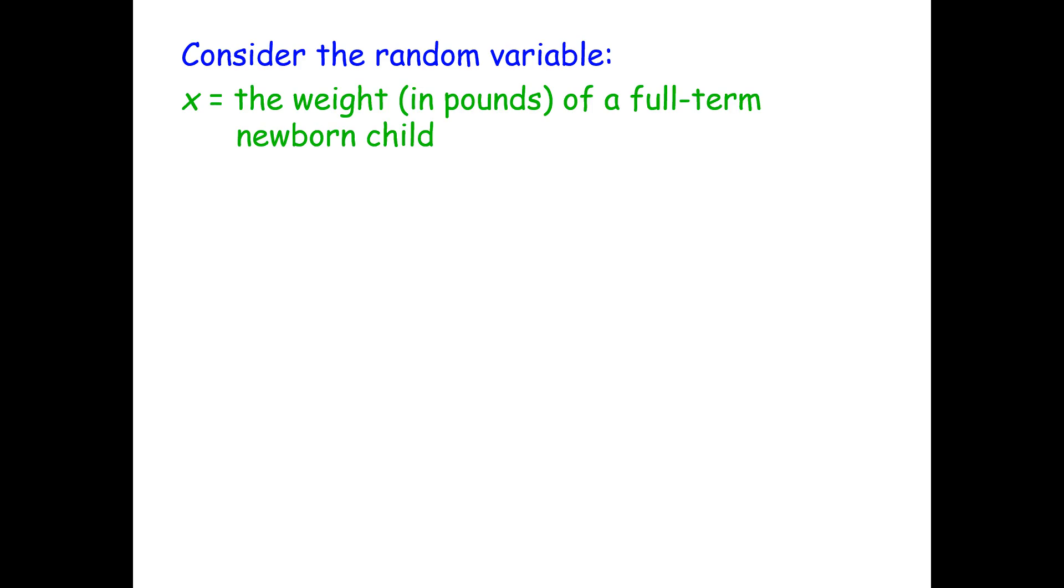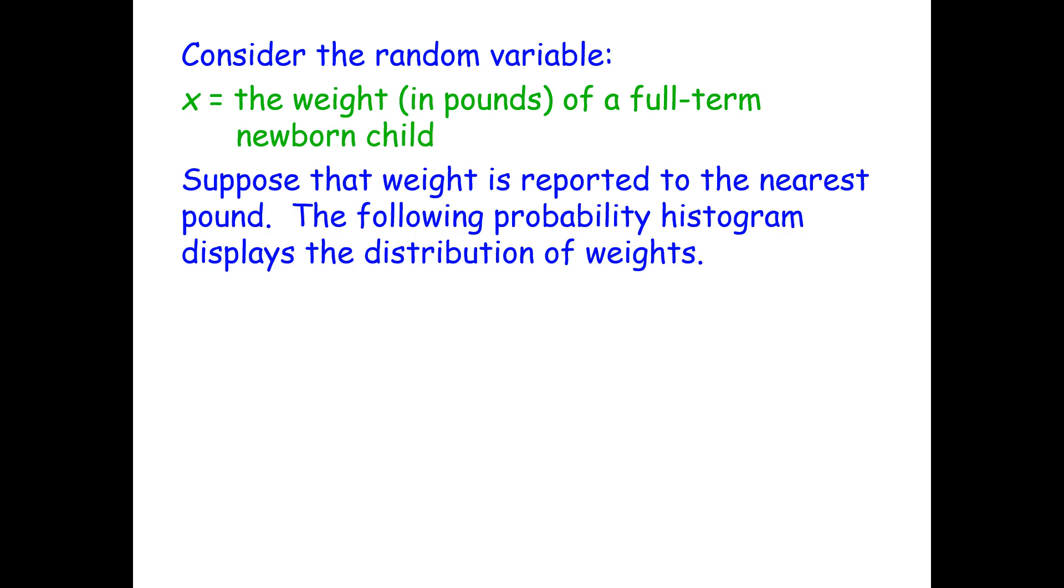Consider the random variable x equals the weight in pounds of a full-term newborn child. What type of a variable is this? Is it discrete or is it continuous? It's continuous.